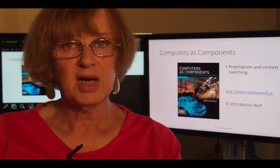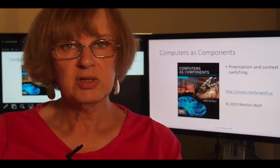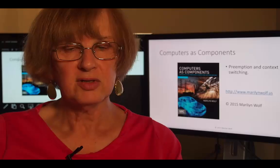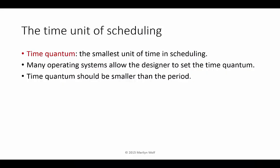Two of the most powerful concepts in operating systems are preemption and context switching. They give the operating system much more control over how processes execute. The time quantum is the smallest unit of time in scheduling. It determines how often the operating system will interrupt and decide what process to run next. Many operating systems, particularly real-time operating systems, allow the designer to set the time quantum. The time quantum should clearly be smaller than the period of the fastest process in the system, otherwise the operating system won't be able to control the execution of that process.